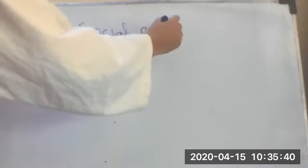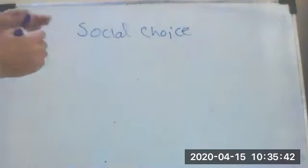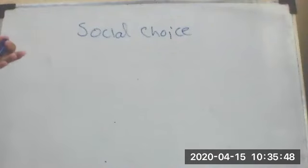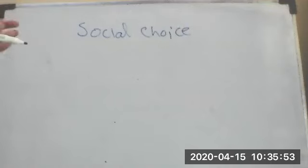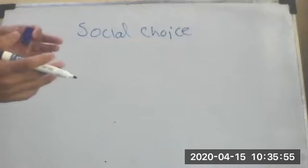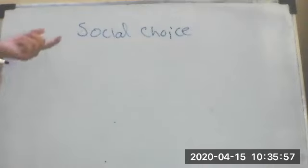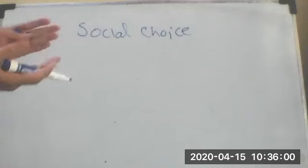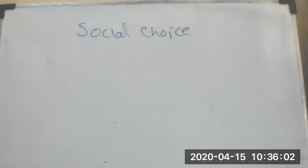Computational social choice means aggregating the choices of agents. Agents have different preferences — preference orderings — and we need to aggregate these preference orderings to come up with one outcome. We also need to collect these orderings into one combined ordering. These are two different things.